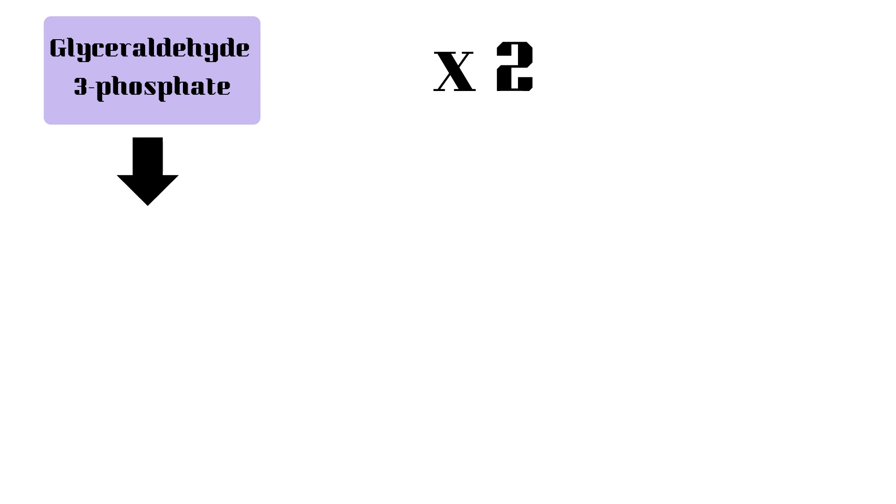The glyceraldehyde-3-phosphate is converted into 1,3-bisphosphoglycerate through the addition of a phosphate group using the enzyme glyceraldehyde-3-phosphate dehydrogenase. NAD+ is also converted into NADH. This NADH is used in the electron transport chain later on to produce even more ATP. This will be discussed in future videos.